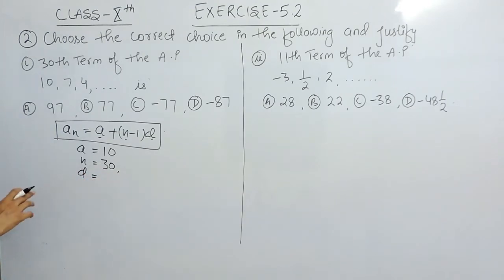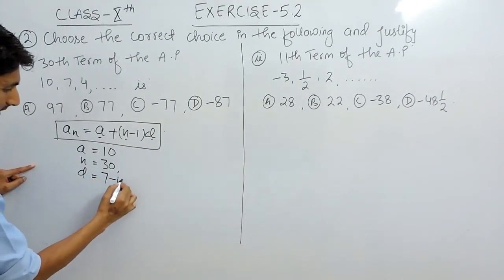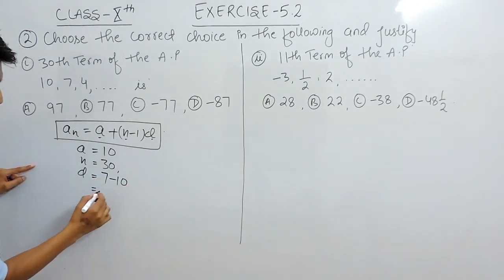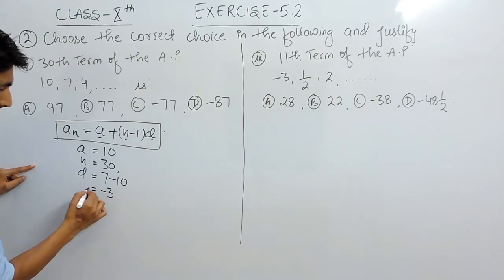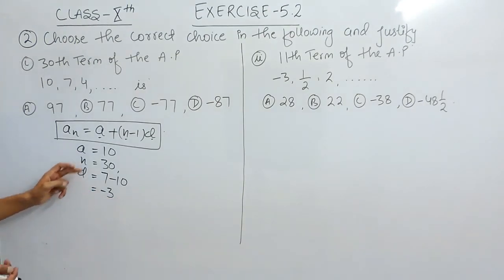Which is the common difference. For that, we can subtract any two values. So we are subtracting 7 - 10, so this is -3. So we have all three variables to find the an.